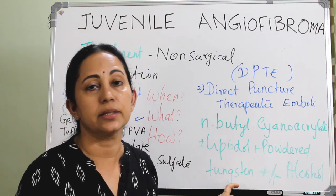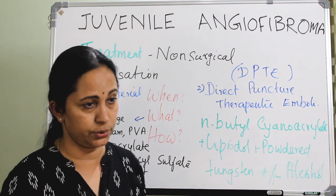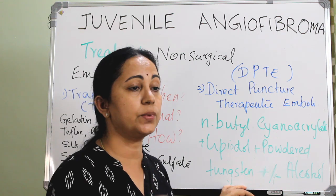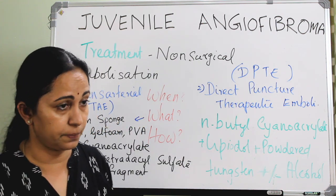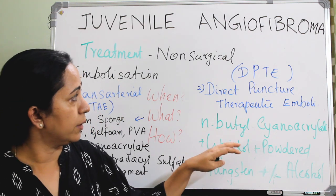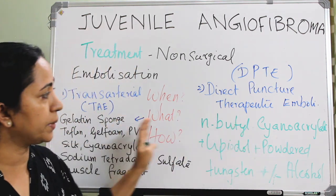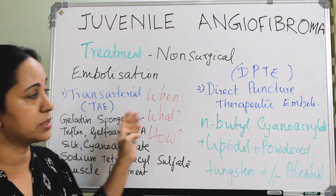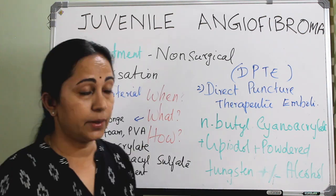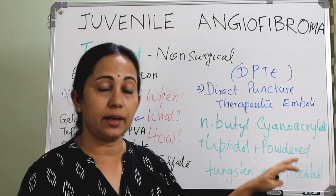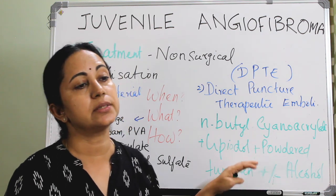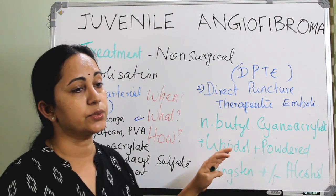At the time of surgery, the tumor can be easily identified from surrounding tissue because this tungsten powder will give a blackish color, making the tumor tissue easily identifiable. This can be done alone, but the more preferred method is a combination of trans-arterial embolization along with the direct puncture therapeutic embolization. This is a newer concept. Absolute alcohol has got a direct cytotoxic effect, giving a good therapeutic effect also in case of JNA.